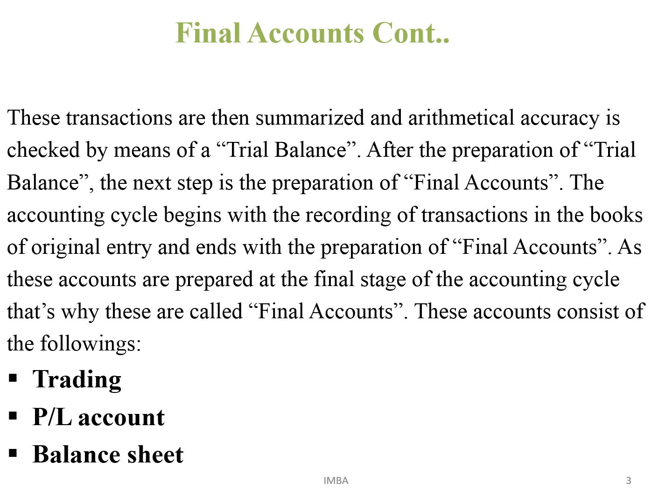As these accounts are prepared at the final stage of the accounting cycle, that is why these are called final accounts. These accounts consist of the following: First, we prepare a trading account in which we calculate the gross profit or gross loss. The second one is the P&L account in which we calculate net profit or net loss. And lastly, we prepare the balance sheet which shows the financial position of the business. In final accounts, we prepare two statements: first is the income statement, which consists of the trading account and P&L account, and second is the position statement, which consists of the balance sheet showing the assets and liability position of the business.